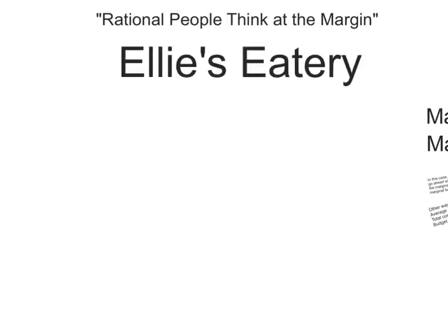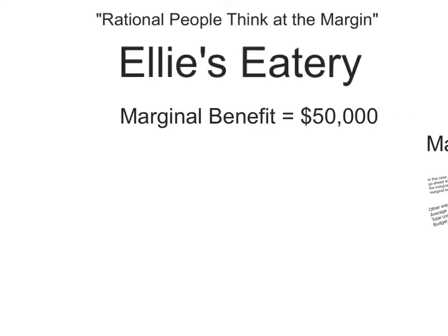She's going to think at the margin when evaluating whether this is a good idea or not. First of all, she's going to think about how much more revenue — what is the benefit, the additional benefit that she would see by adding the second dining room. The marginal benefit is the additional benefit, and this could be the money that comes in, the revenue, as a result of selling more meals.